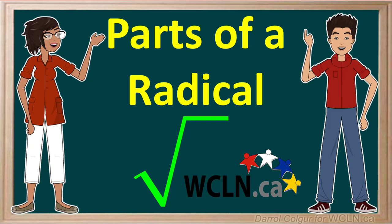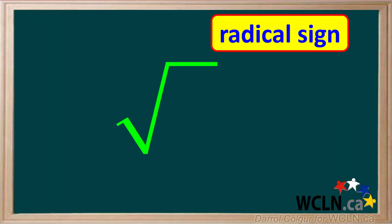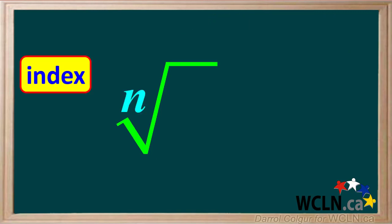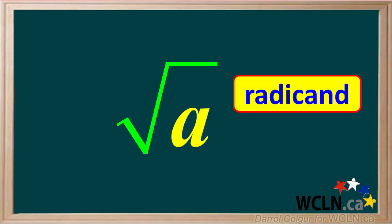Here we'll take a look at radicals and make sure we know how to name each part and what each part means. This symbol shown in green is called a radical sign. A number written just above the v-part on the left side of the radical sign is called the index of the radical, and any number written under the radical sign is called the radicand.